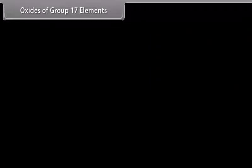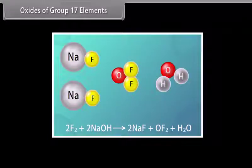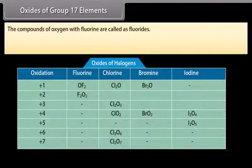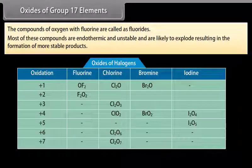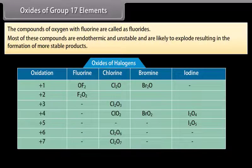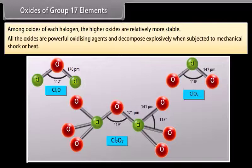Oxides of group 17 elements: Halogens do not combine with oxygen directly. For example, oxygen difluoride (OF2) is prepared by the action of fluorine on 2% sodium hydroxide solution. The compounds of oxygen with fluorine are called fluorides because fluorine is more electronegative than oxygen. Most of these compounds are endothermic and unstable and are likely to explode. Among oxides of each halogen, the higher oxides are relatively more stable. All oxides are powerful oxidizing agents and decompose explosively when subjected to mechanical shock or heat.